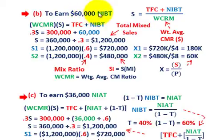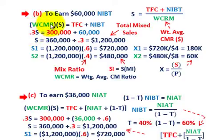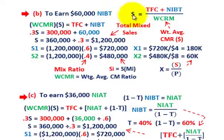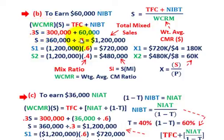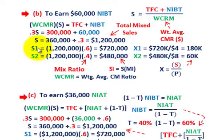Now let's say we want to earn $60,000 in net income before taxes. We add that profit target to our equation: 0.30 (weighted CM ratio) times sales equals total fixed cost of $300,000 plus net income before taxes of $60,000. Solving for S, sales equals (total fixed cost plus net income before taxes) divided by the weighted average CM ratio. So S = ($300,000 + $60,000) / 0.30 = $360,000 / 0.30 = $1,200,000 total mixed sales.